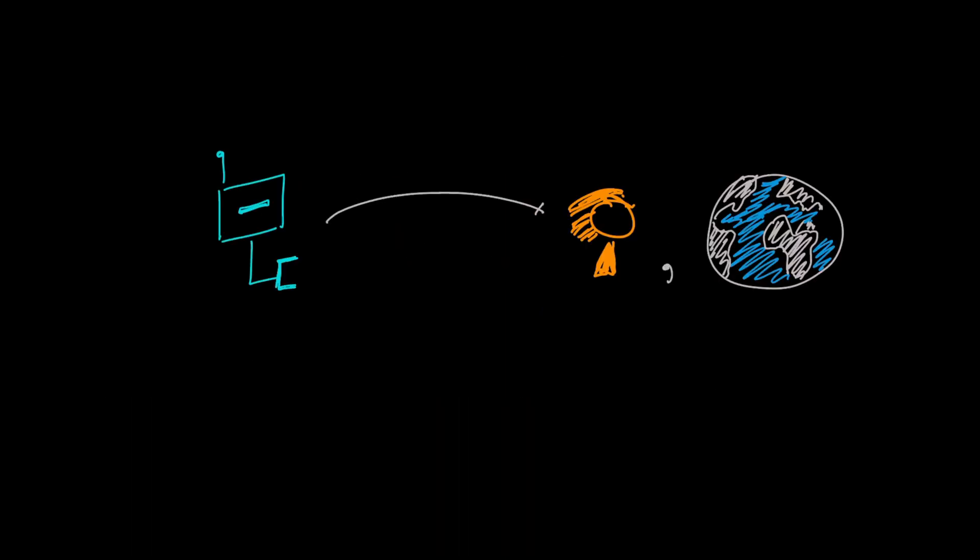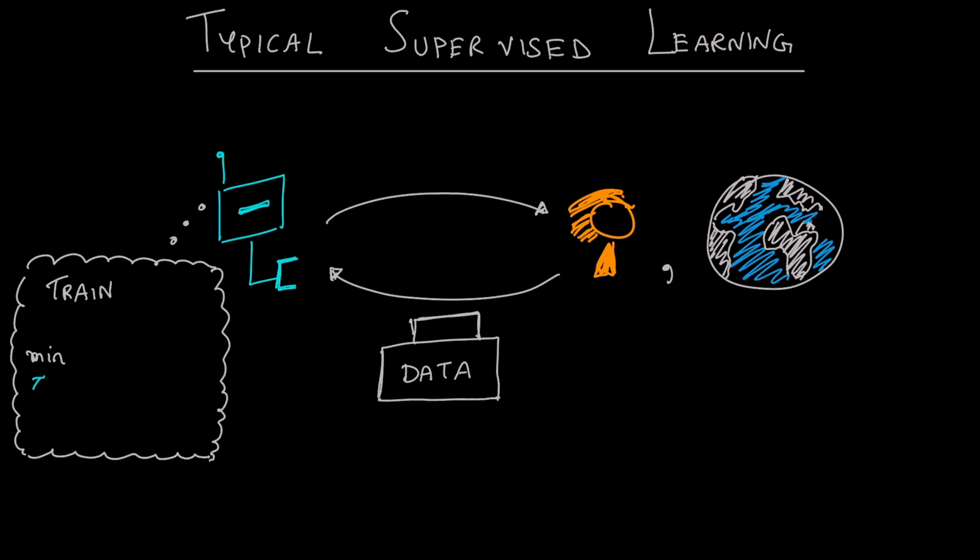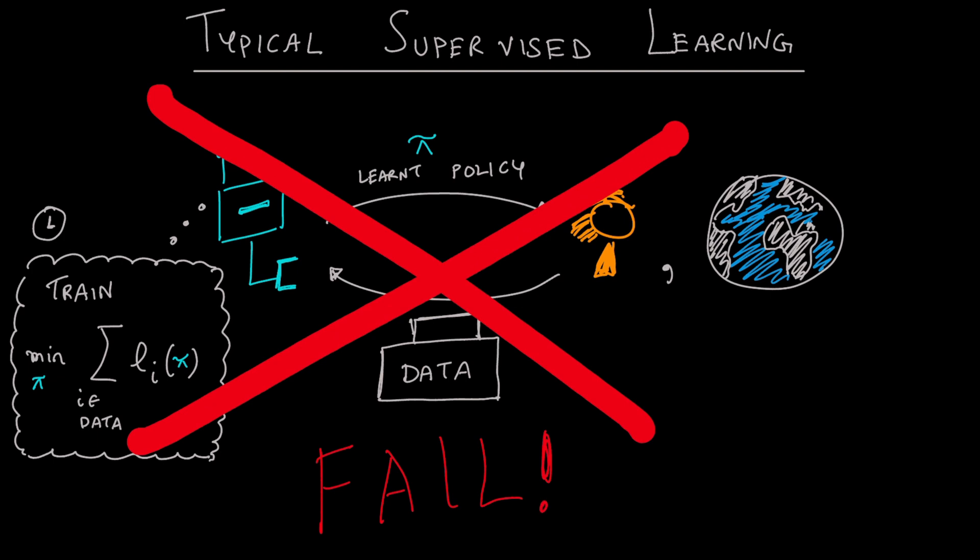So, how should we train the robot to learn from interactions? The simplest approach is to treat this as a supervised learning problem. Engineers collect data from the human and the world and ship this to the robot. The robot trains offline by searching for the optimal policy that minimizes loss on the provided data. After training is done, the robot deploys the learned policy. Unfortunately, this failed spectacularly.